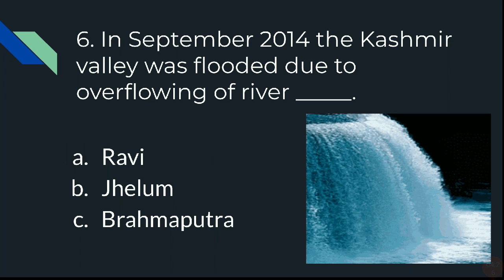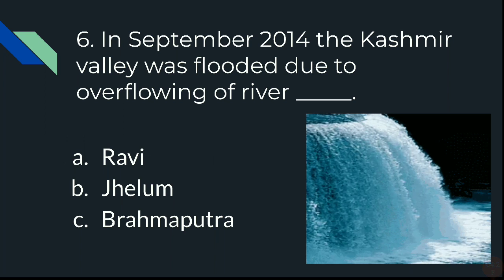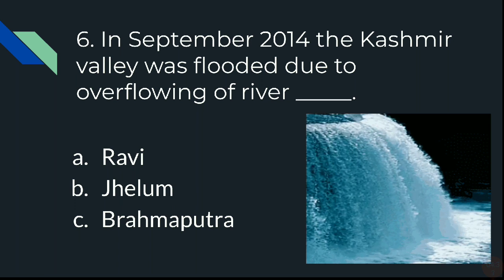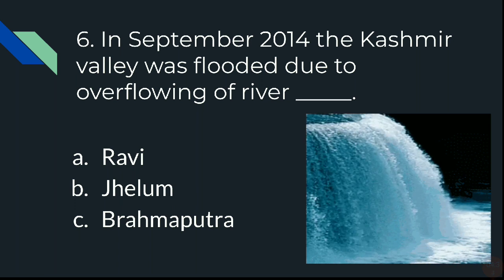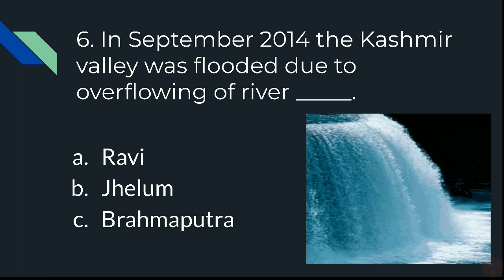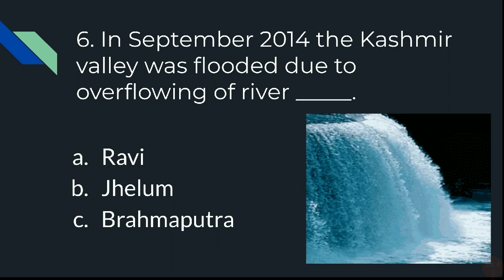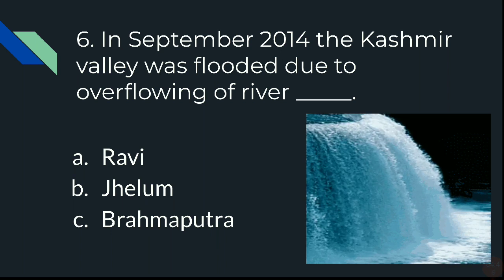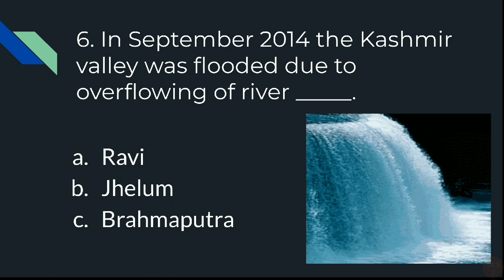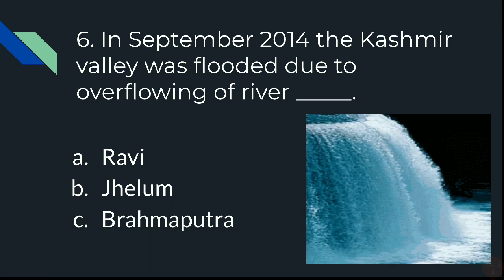Question 6: In September 2014, the Kashmir valley was flooded due to the overflowing of a river. You are supposed to tell the name of the river which overflowed in September 2014 in Kashmir, bringing devastating floods. Options: A) Ravi, B) Jhelam, or C) Brahmaputra.